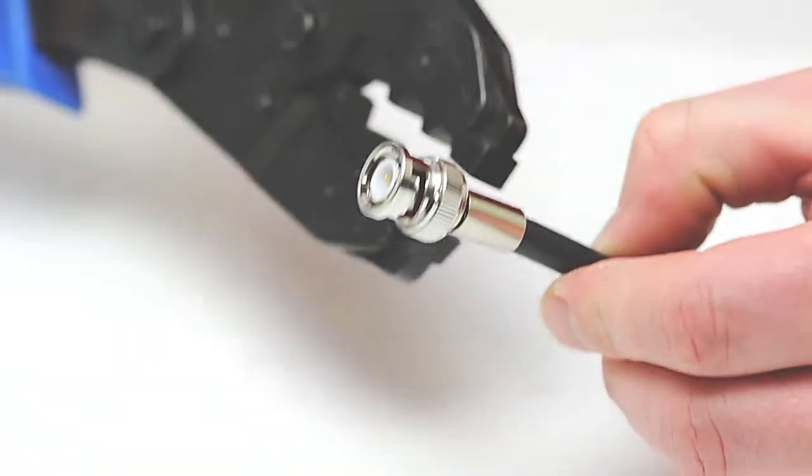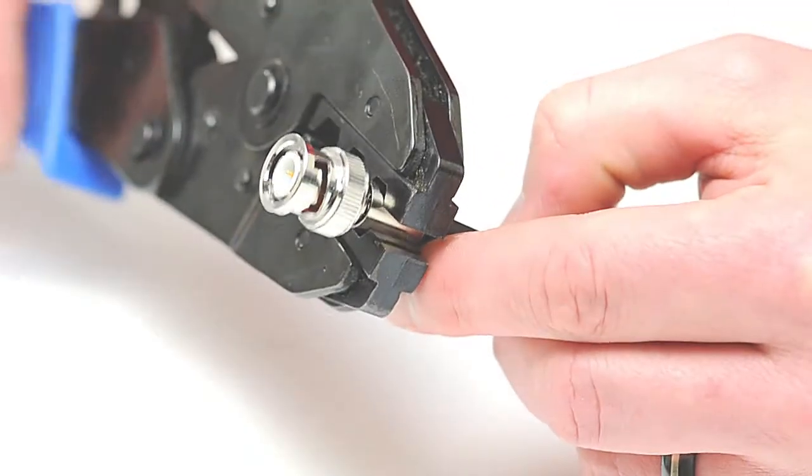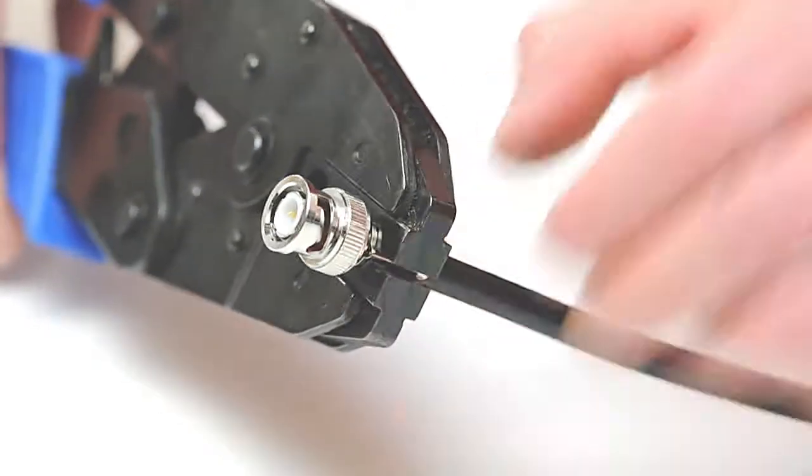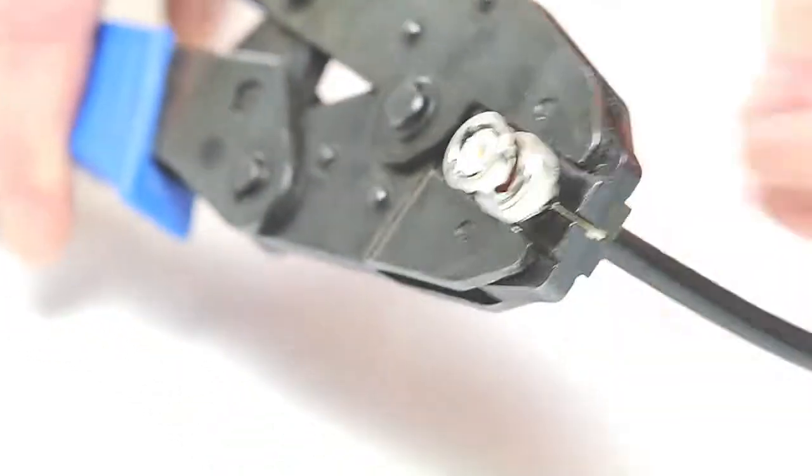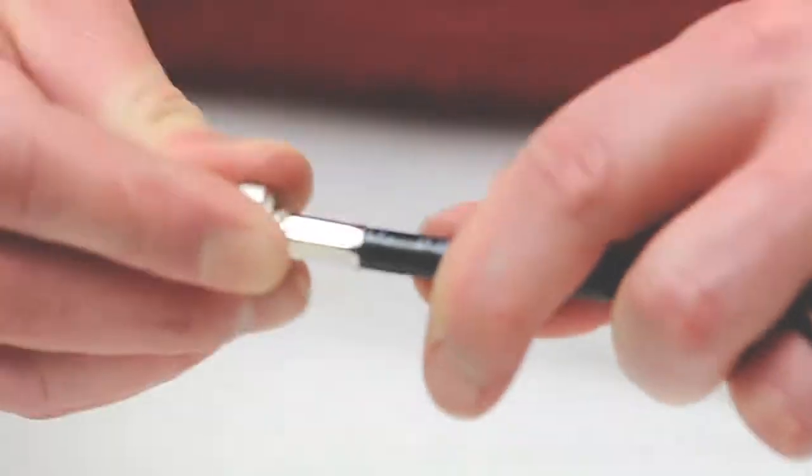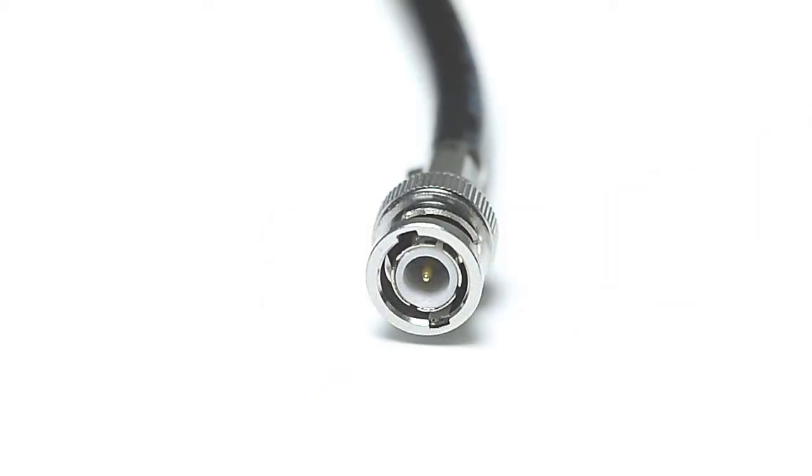Take your crimp tool and crimp the ferrule onto the jacket. This will create a secure connection. Give it a tug for testing to make sure it's properly seated. Now you've successfully terminated a male BNC connector.